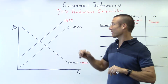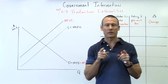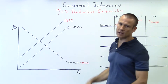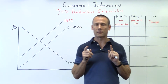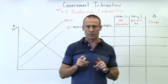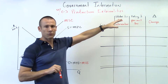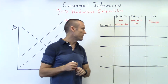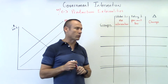Hey everybody, welcome back. We're on government intervention, and we're going to be looking at negative production externalities. This is an opportunity for government to come in there and make things a little bit better. We've got a welfare table, so we're going to do a full-blown welfare analysis. Just want to take you through it really quickly.